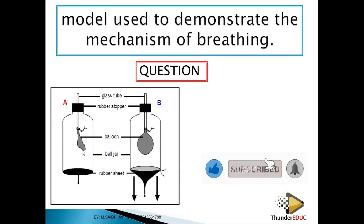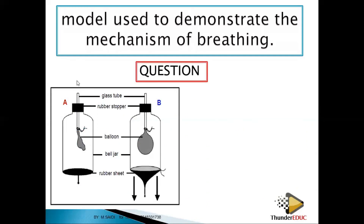When breathing out, the lungs contract and push air out. The volume of the balloon representing the lungs is small, so the pressure is high and air is pushed out. When breathing in, the volume has increased, the pressure is low, and air is dragged into the lungs.